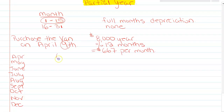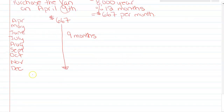I'm going to record $667 in April, May, June, July, August, September, October, November, and December — so that ends up being 9 months. If you do $667 multiplied by 9 months, then when I record the depreciation expense at the end of the fiscal year, I'm going to record $6,003 for depreciation expense.